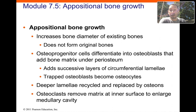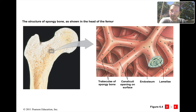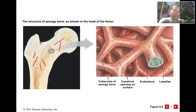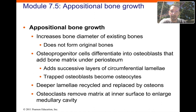The trabeculae in spongy bone are oriented along lines of mechanical stress, which is why bones tend to snap in one direction but not another. In forensics, cutting a bone lengthwise and examining the trabecular pattern can reveal information about a person — male or female, body weight, gait, and even what sports they played.